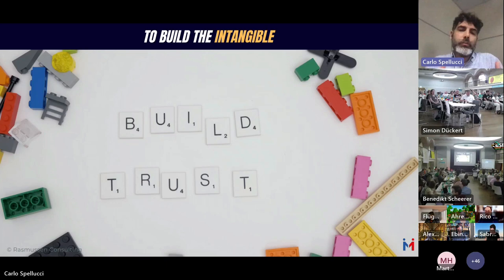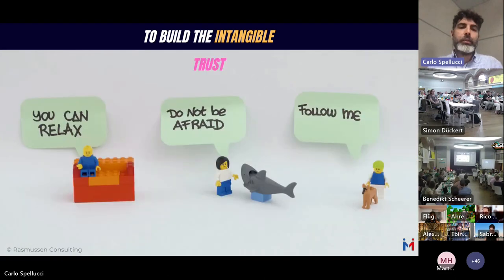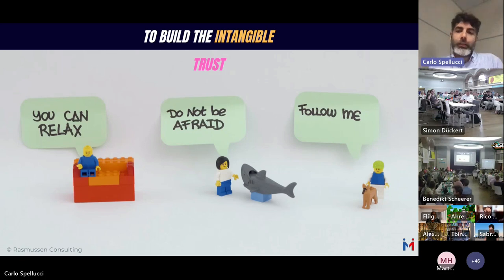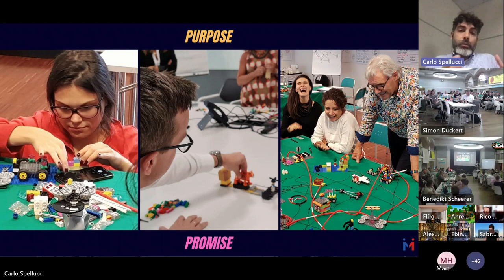The core of LEGO Serious Play is to build the intangible — something hard to visualize until you actually do. For example: build trust. You could build a red sofa and say trust is what makes people relax. Or a shark — trust means you're less afraid of risk. Or following a dog in the woods — you follow someone else's judgment. These are examples a nine-year-old can understand.